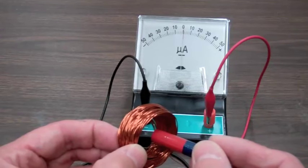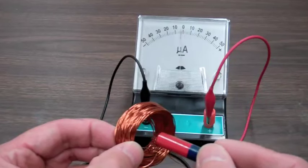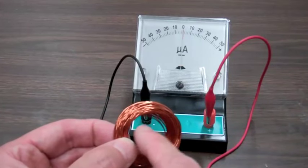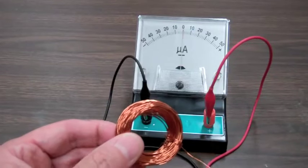And notice if I just hold the magnet there, there is no current flow. It is only when the magnet is moving and when there is therefore a change in magnetic flux with respect to time inside the coil.